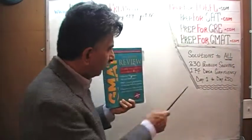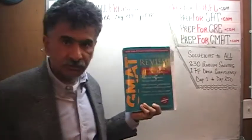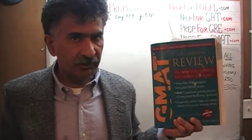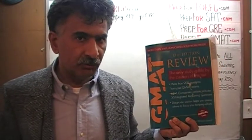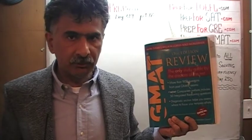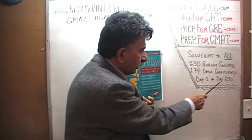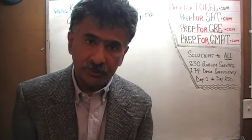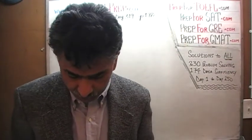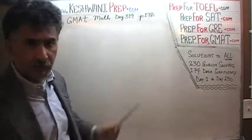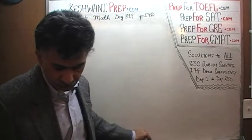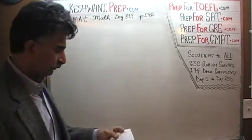The book contains 230 problem solving questions and 174 data sufficiency questions. We have already solved every single math problem from this book. If you are interested in watching any of the original solutions, you will find them from day number 1 to 250. Right now we are in the process of redoing the problems and we are on page number 172. Please turn to it. The very first problem on the page is number 140.